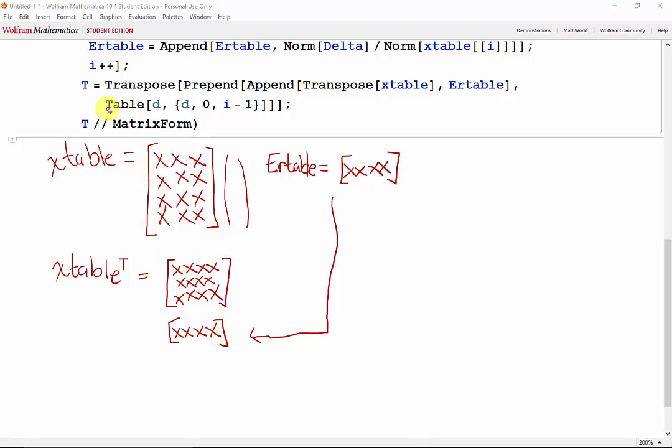And then we also have this other vector d, the iteration number, which is also 1 by n. And so d, this is 1 by n, can also be added now to the beginning of the x table. And then in order to get this in the proper form, we just have to transpose it back.